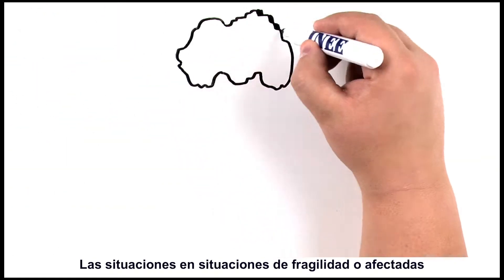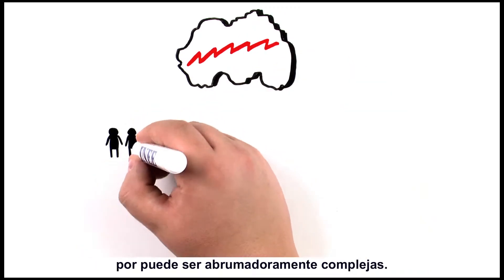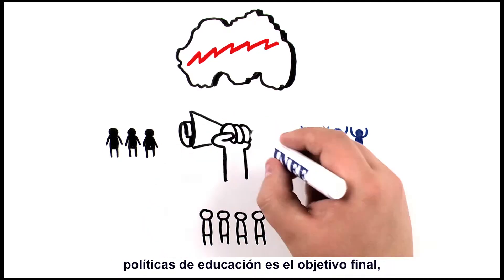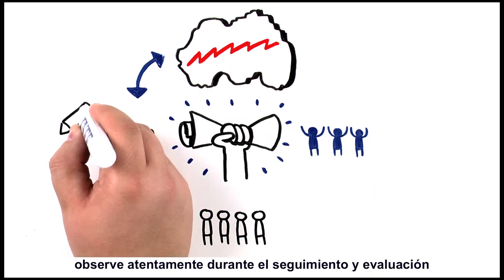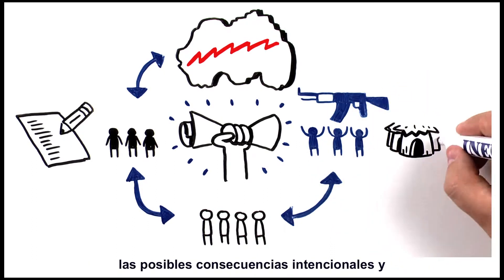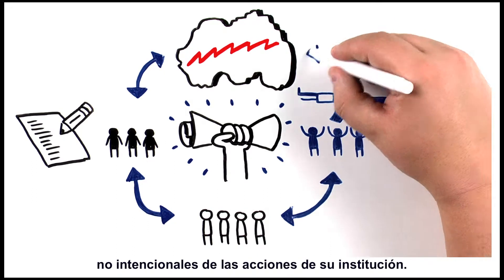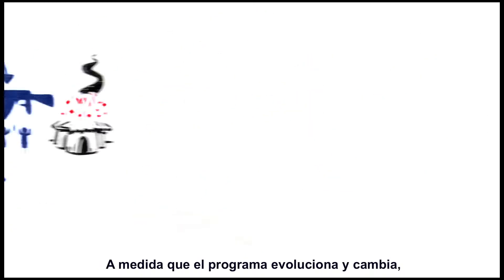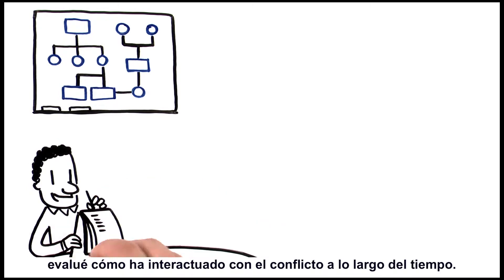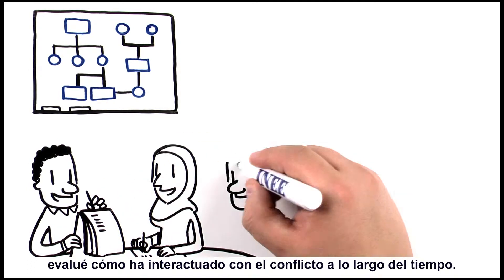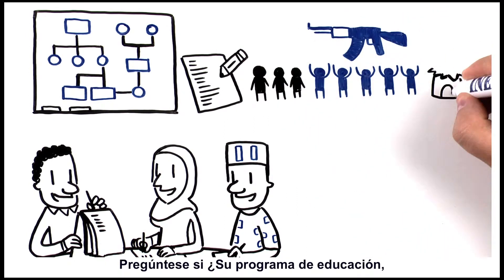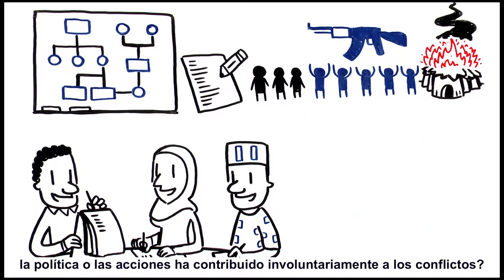Conflict-affected and fragile situations can be overwhelmingly complex. Although strengthening education programmes and policies is the ultimate goal, take care to monitor and evaluate the intended and unintended consequences of your organisation's actions. As the programme evolves and changes, evaluate how the policy or programme has interacted with the conflict over time. Has your education programme, policy or actions unintentionally contributed to conflict?